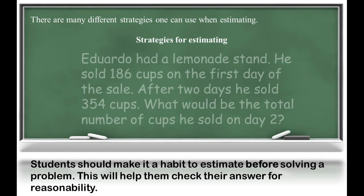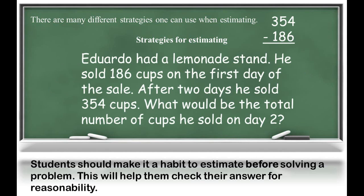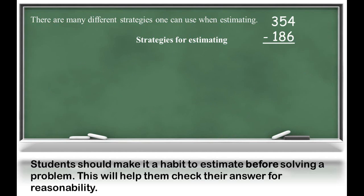Another strategy we could use is rounding. We discussed that 354 minus 186 would get us to our solution. However, to estimate using rounding, I know when I was in school I memorized a rule for rounding. But we would like our students to understand rounding conceptually.